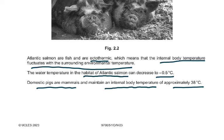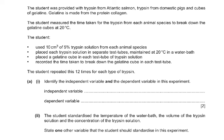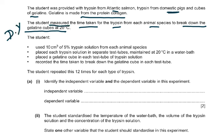All this information — as I mentioned in video 1 — you must read, comprehend, underline, and read the whole question before you start attempting it. The student was provided with trypsin from Atlantic salmon, trypsin from domestic pig, and cubes of gelatin. Gelatin is made from the protein collagen. The student measured the time taken for the trypsin from each animal species to break down the gelatin cubes at 20 degrees Celsius. The time taken to break down the gelatin is always the dependent variable — it is what the student is measuring.